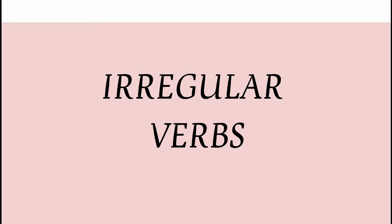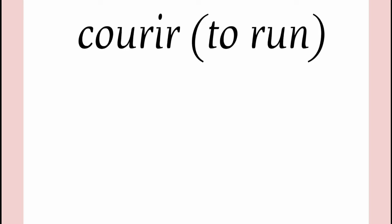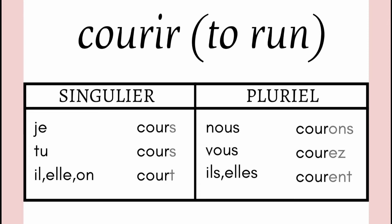So friends, the first verb we will cover in irregular IR verbs is COURIR. COURIR means to run. And how we conjugate this verb is as follows: je cours, tu cours, il court, elle court, nous courons, vous courez, ils courent, elles courent.